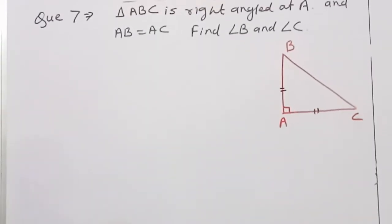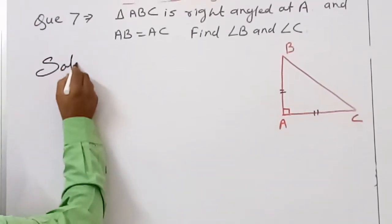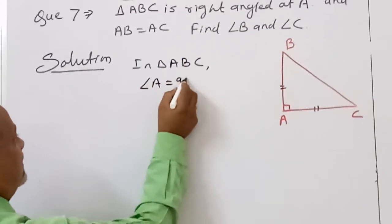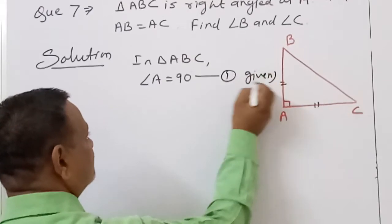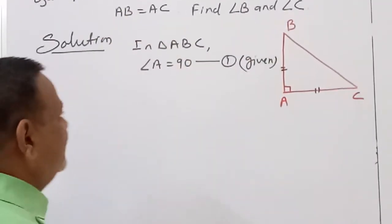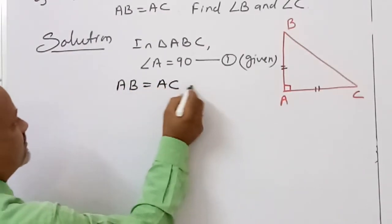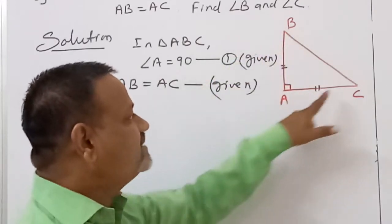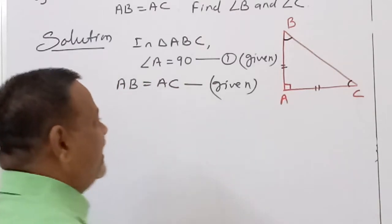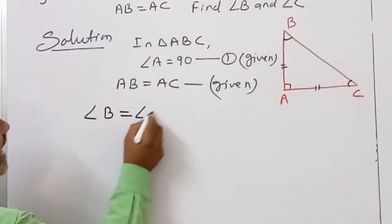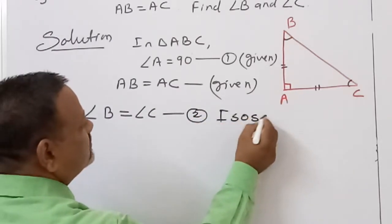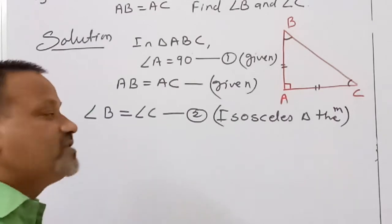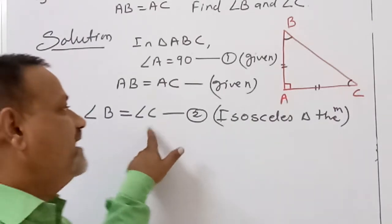Next, question number 7: Triangle ABC is right-angled at A. Solution: In triangle ABC, angle A equals 90 degrees — equation 1, which is already given. Also it is given that AB equals AC, so this is an isosceles triangle. Therefore angle B equals angle C — equation number 2, by the isosceles triangle theorem.